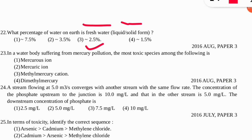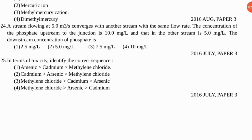The next question: in a water body suffering from mercury pollution, the most toxic species among the following is which one? The correct option is number three — methyl mercury is the most toxic pollutant in mercury pollution. Question 25: identify the correct sequence in terms of toxicity of the following molecules. The correct option is number one — arsenic is the most toxic element, followed by cadmium, then methylene chloride.